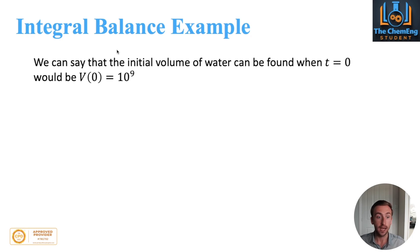Now what we can say for the differential balance is that the initial volume of water can be found when t is equal to zero. So if you follow the process in the calculation, you will work out that v of zero becomes 10 to the power 9. So that is the initial amount of water before the drought established.